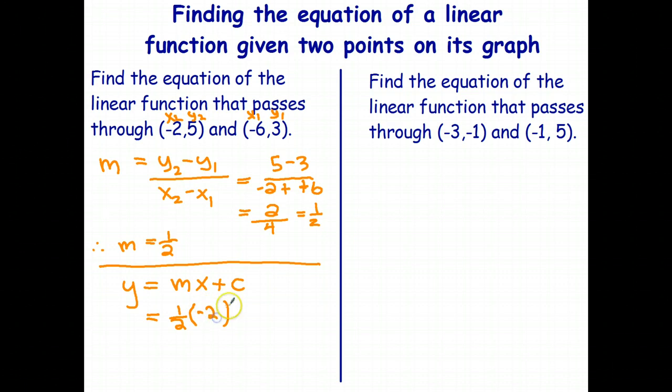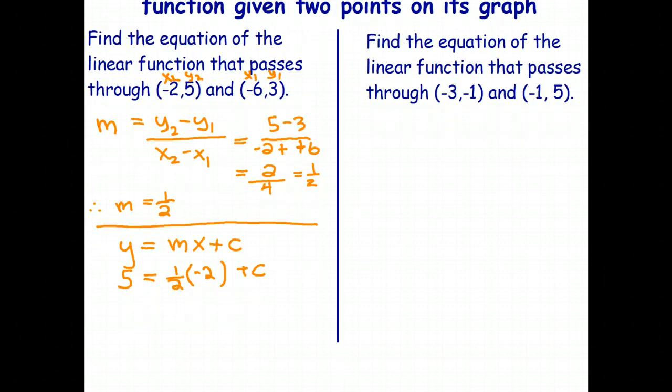So I'll put negative 2 in for x. C is what I don't know. And when x is negative 2, y is 5. So what I've done there is I've just substituted, I wrote the general equation, y equals mx plus c. I put one half in for the gradient, which I've worked out previously, and I chose the x and y coordinates of one of those points and substituted them in.